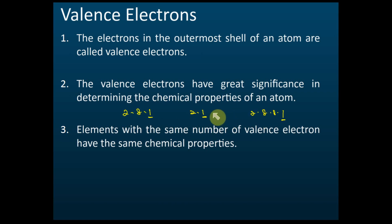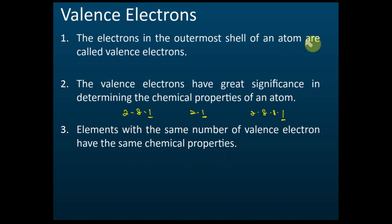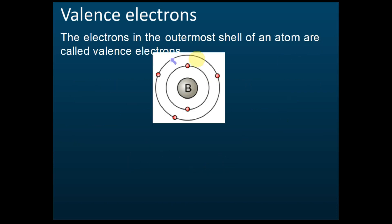Valence electrons have great significance because they determine chemical properties. Elements with the same number of valence electrons have the same chemical properties. For example, for this atom, the number of valence electrons is three — one, two, three — and this is the outermost shell.